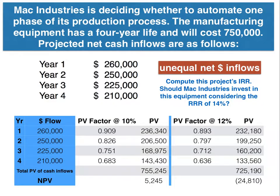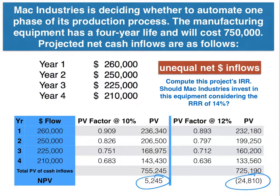At 10%, I got a present value above zero, so we know the return is more than 10%. At 12%, I got a negative present value of almost $24,810. So this investment is returning something between 10% and 12%. It's probably closer to 10% than 12% based on the present value amounts. Using this trial and error method gives us a range, but there is something we can do to get even closer to the actual internal rate of return.